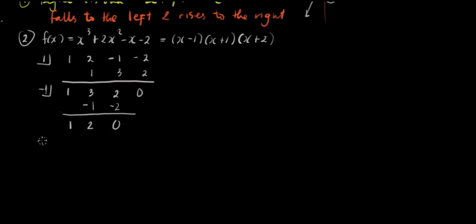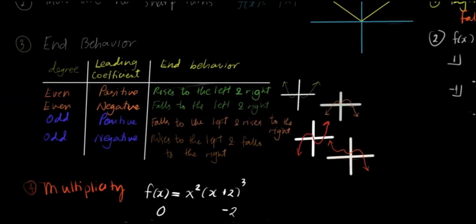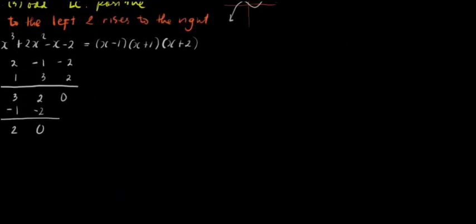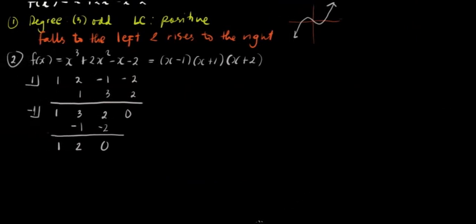If you notice, all of these have odd multiplicity. Odd multiplicity means everything will just cross at all the zeros. When multiplicity is odd, the graph crosses. When it's even, it bounces. Since all have multiplicity 1, the graph will cross at all zeros.